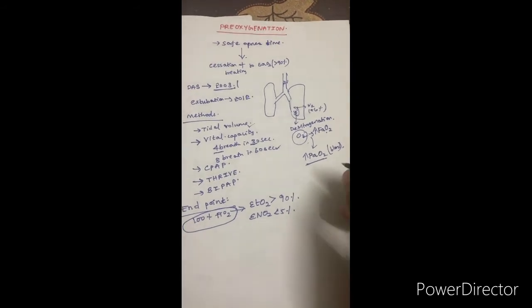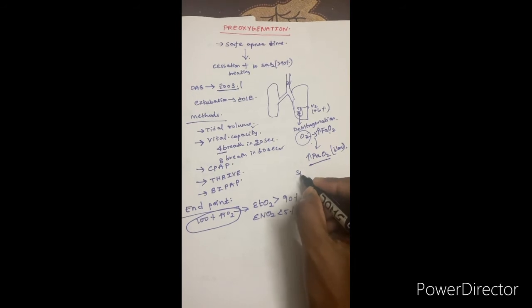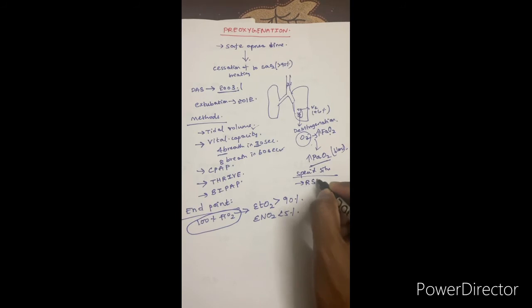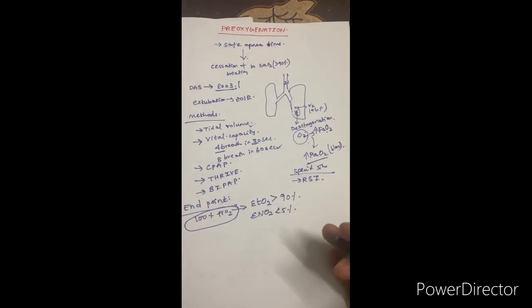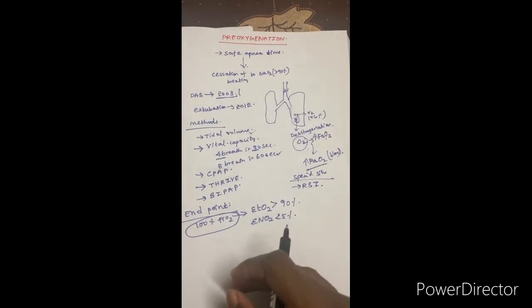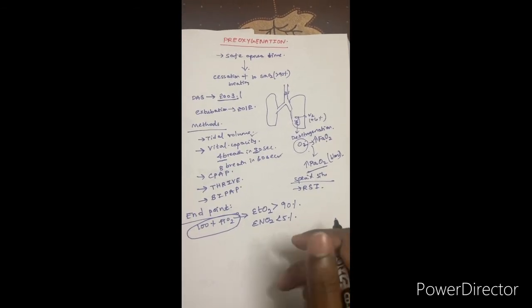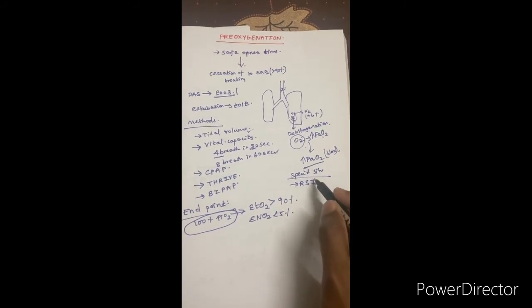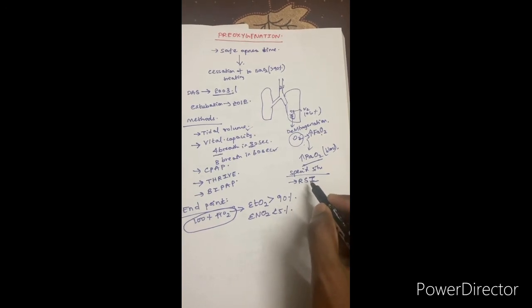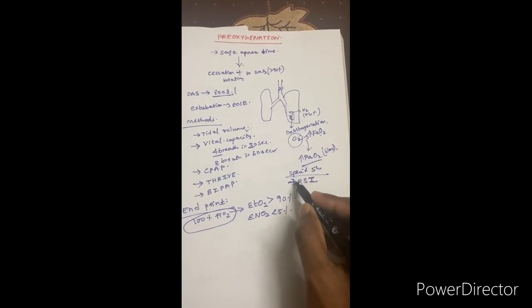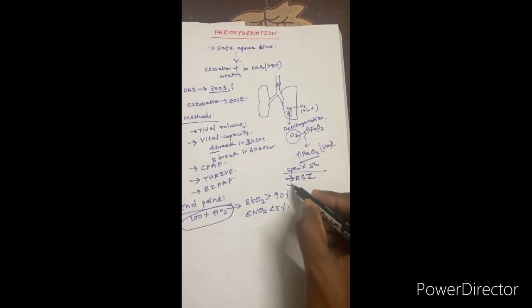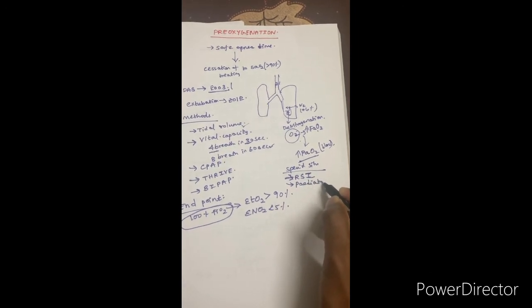Pre-oxygenation is especially vital in rapid sequence induction (RSI), where ventilation is not performed during the apnea period. In modified RSI, ventilation is performed, but in standard RSI it is not. Therefore, the apnea period until desaturation will be very short, making pre-oxygenation the most critical step.